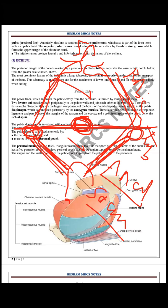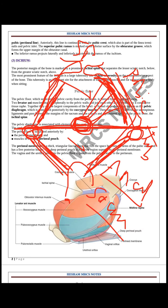The origin of the levator ani muscle is from the back of the body of the pubis, then a tendinous arch lining the inner aspect of the pubic ramus, attached from the symphysis pubis to the ischial spine. The tendinous arches on both sides meet together within the midline into the median raphe and into the perineal body — this is the origin and insertion of the levator ani muscle, forming the pelvic floor or pelvic diaphragm.